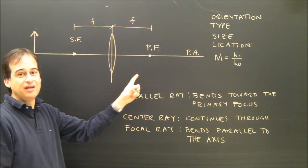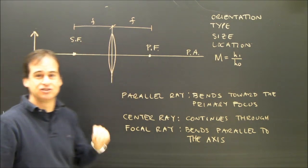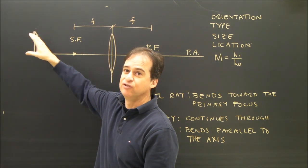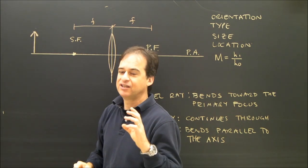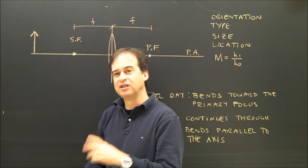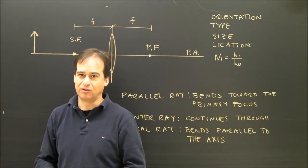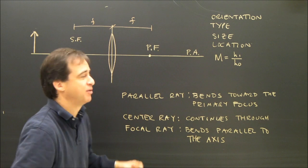In order to find the image of this object, here's my object, it's just an arrow. In order to find the image of that, I use three rays. It only takes two to locate the image, but we need the third one to confirm if it's real or virtual and to see that we did it correctly. So these are the three rays we're going to use.